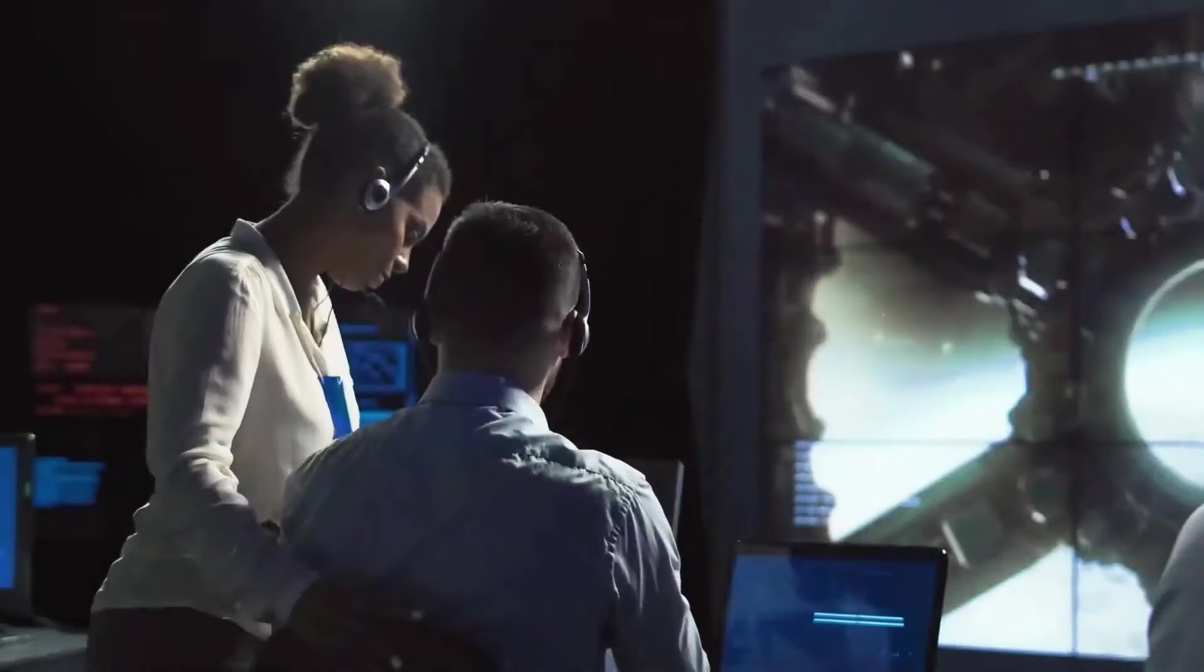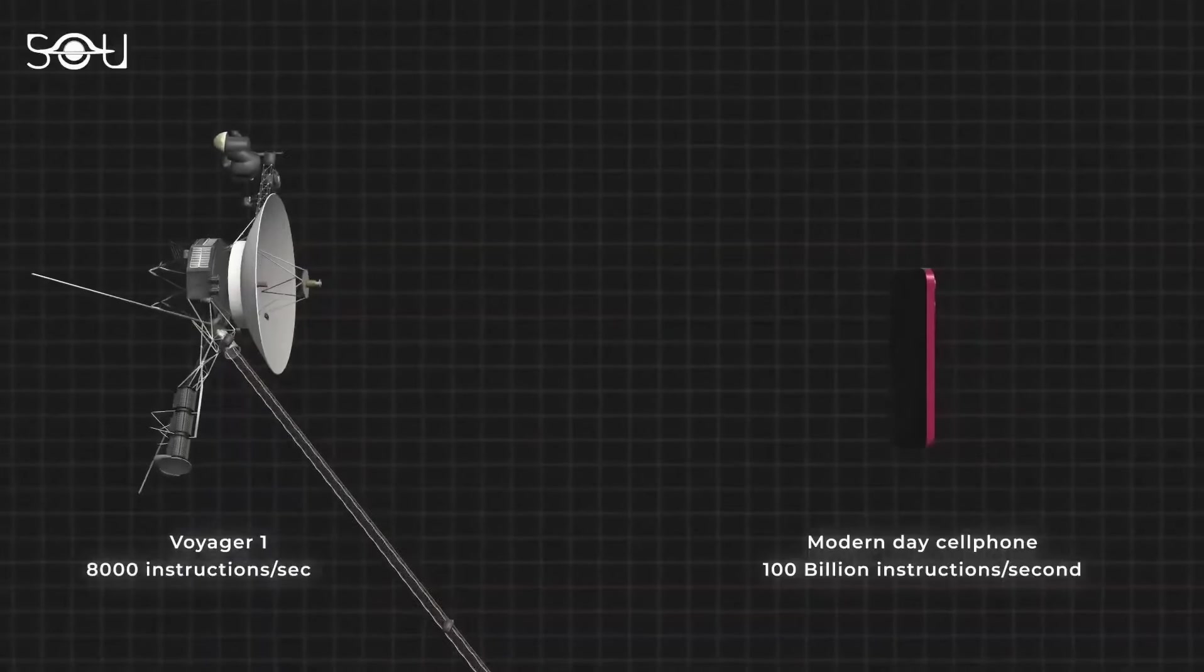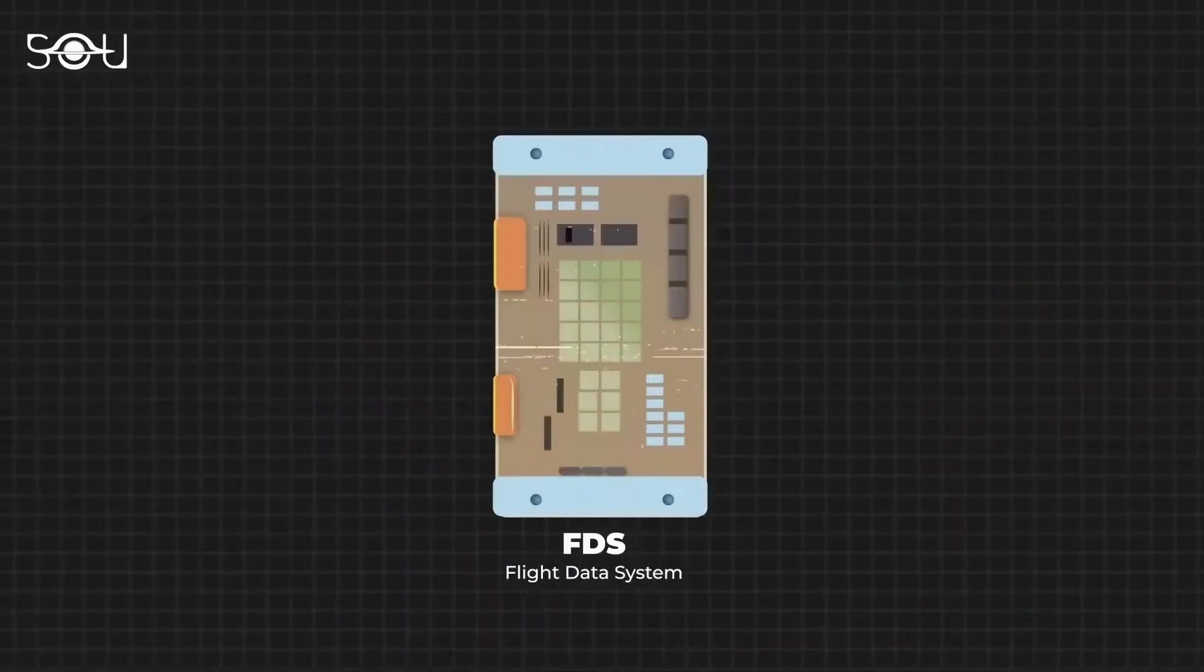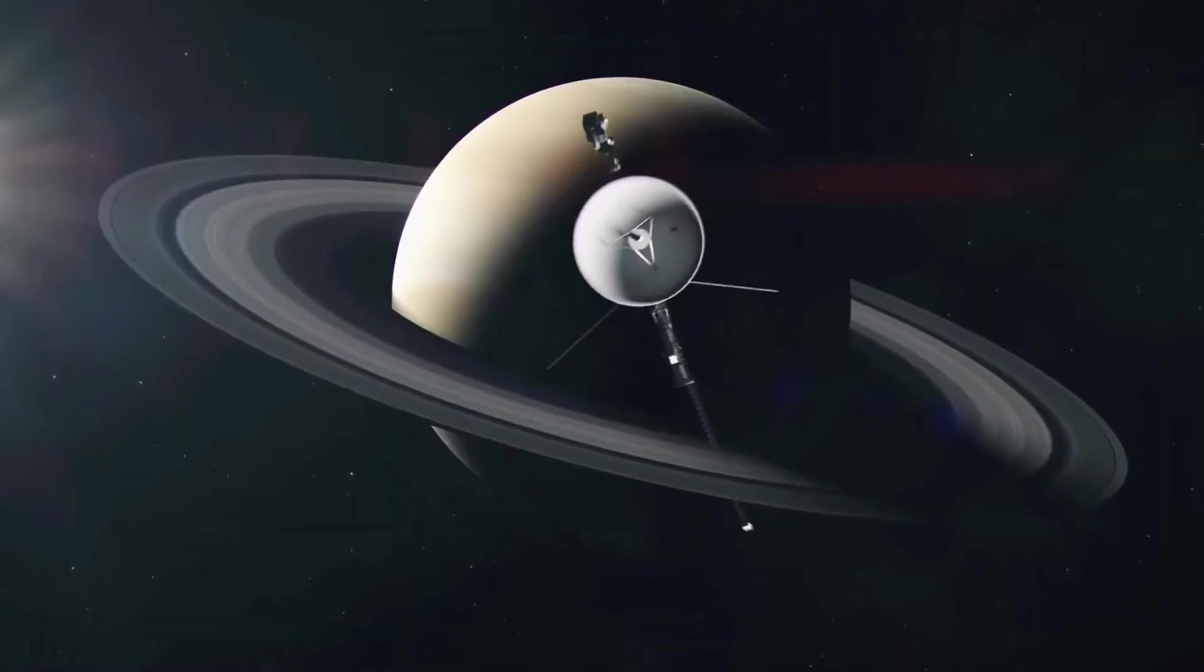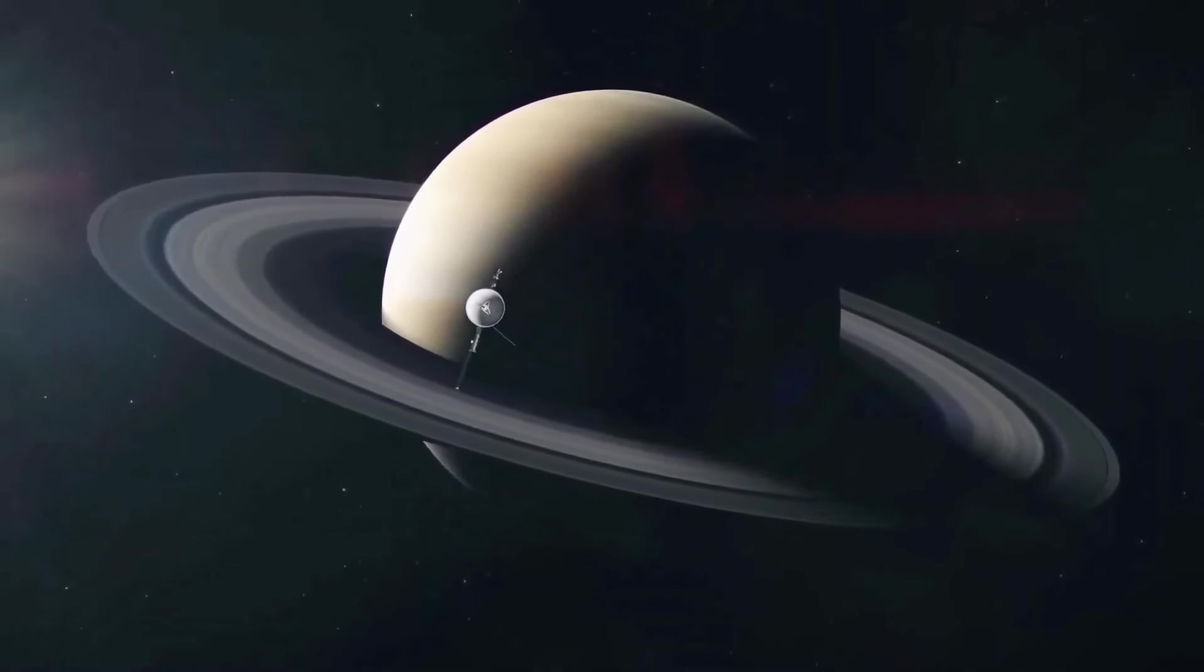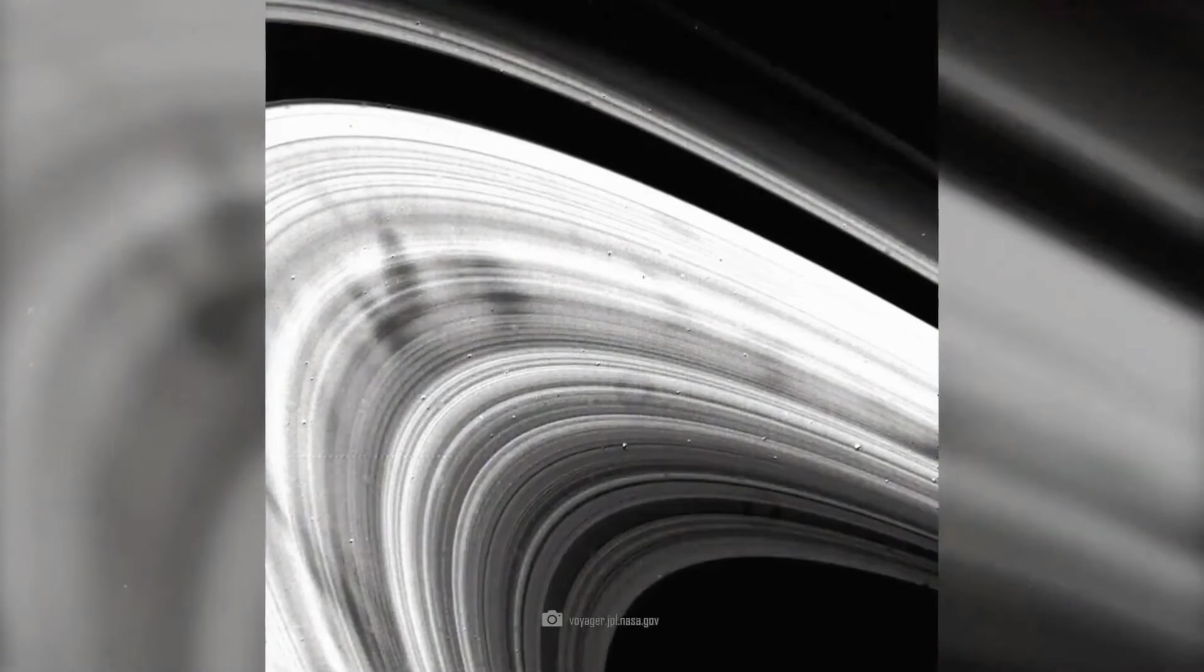Despite the fact that the project had been extended in the hopes that the Voyagers would reach interstellar space and had been renamed the Voyager Interstellar Mission, Sagan pleaded with NASA leaders to order Voyager 1 to send one more batch of pictures. As a result, the probe pointed its cameras back toward the inner solar system on Valentine's Day in 1990 and snapped 60 final pictures.